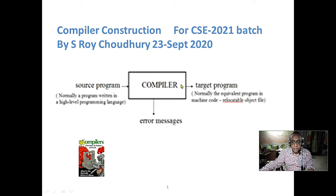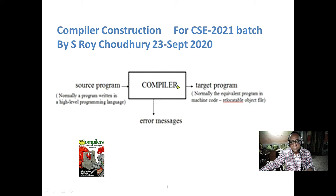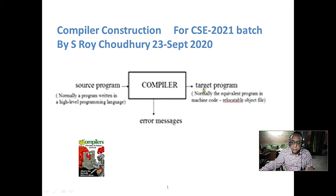You can take the compiler as a black box. The input is the source program — it can be C, Java, or Python. For Java and Python, it can be interpreted, and similar technology is there. The target program may run on an interpreter or on a different or same target machine. Error messages will also come, and those error messages are very helpful to correct errors.